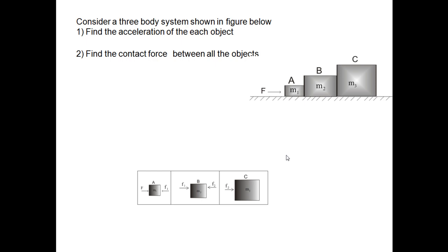The first problem: consider a three-body system shown in the figure. We have three bodies A, B, and C which are side by side. Their masses are M1, M2, and M3. An external force F is acting on mass A. We need to find the acceleration of each object and the contact force between all the objects. Let's remember the steps taught earlier.